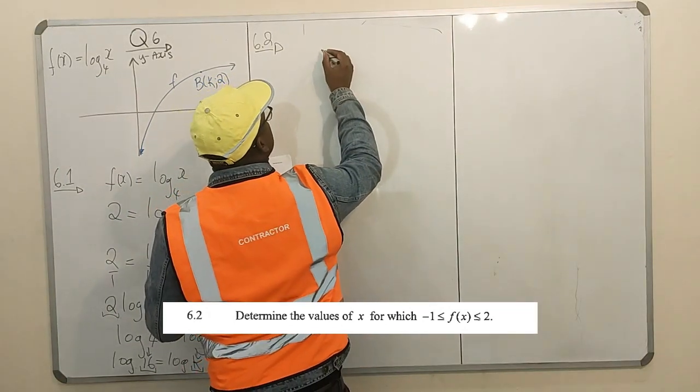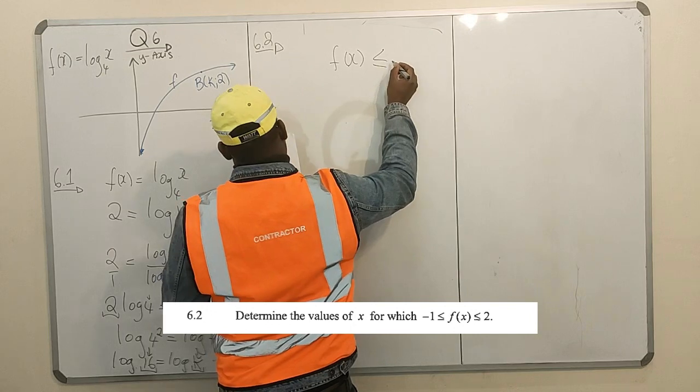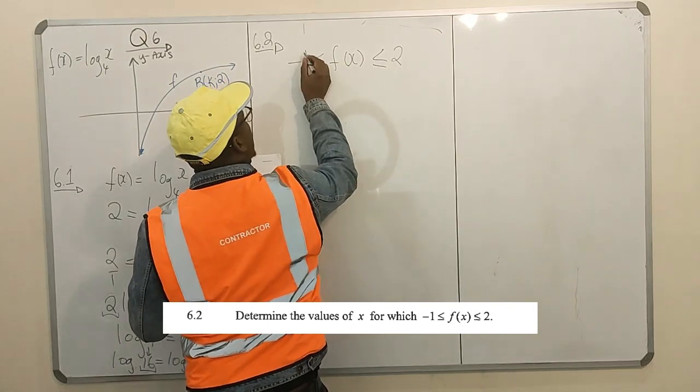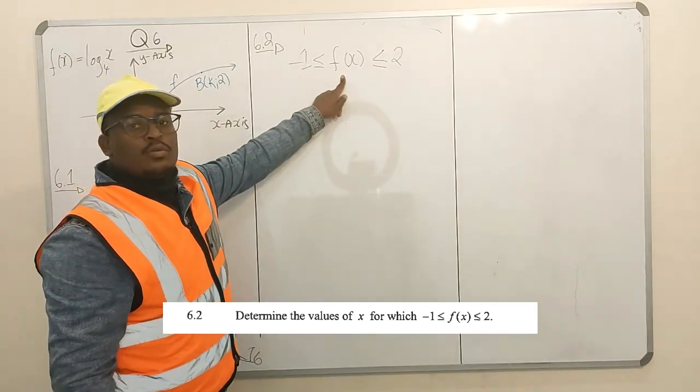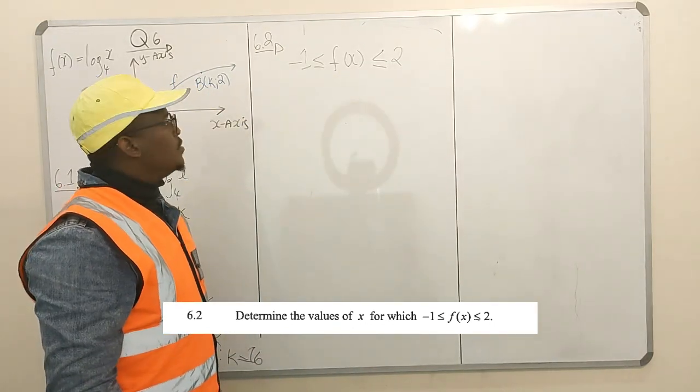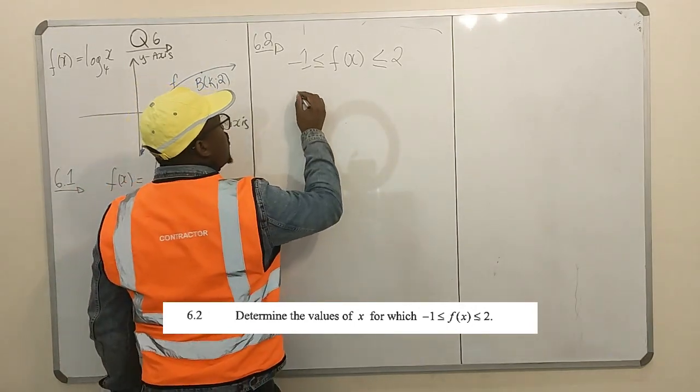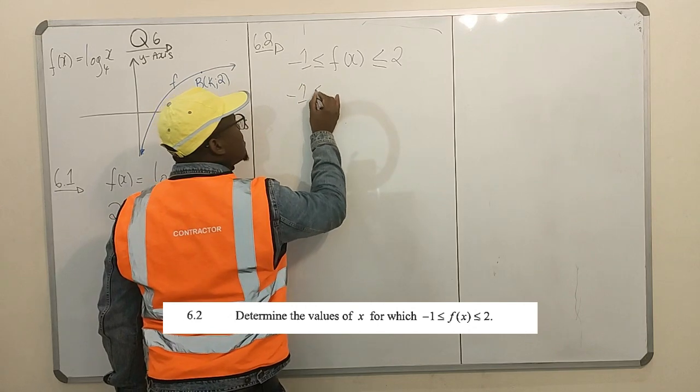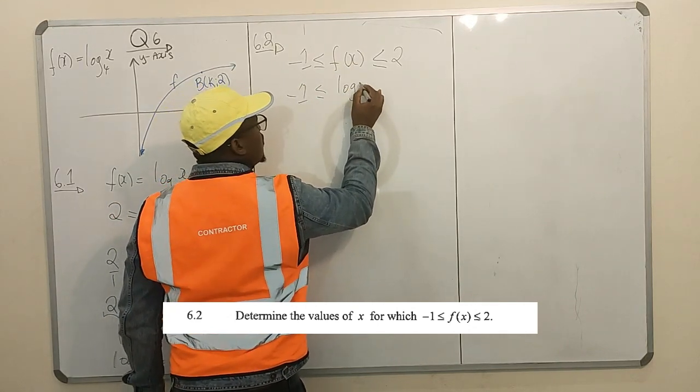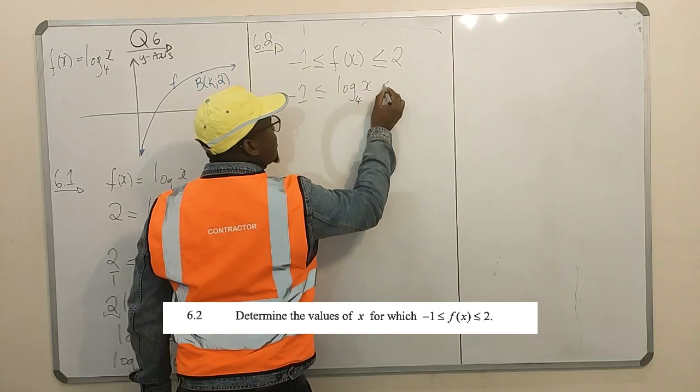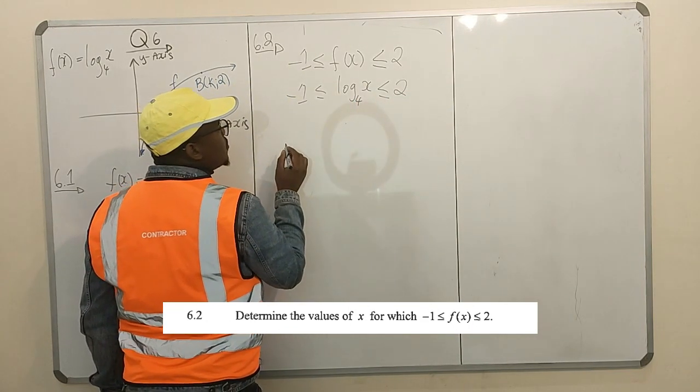For which values of x is f(x) less than or equal to 2, greater than or equal to minus 1? Find the values of x for which this thing is true. We have -1 is less than or equal to f(x), which is log₄(x), less than or equal to 2.